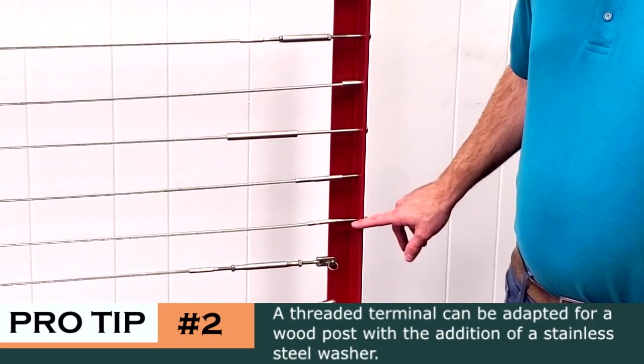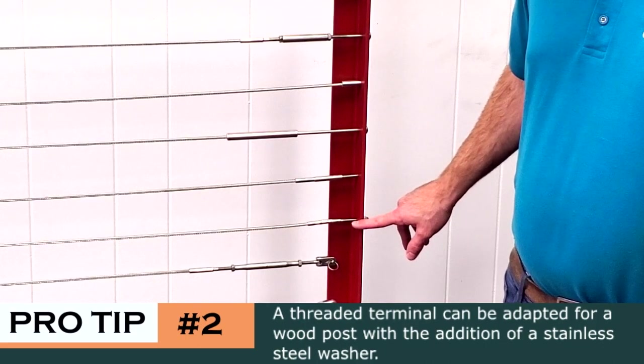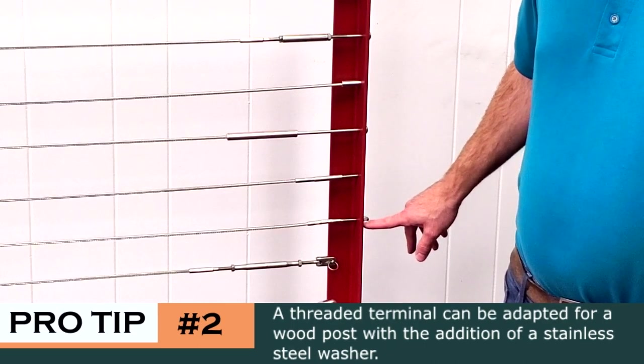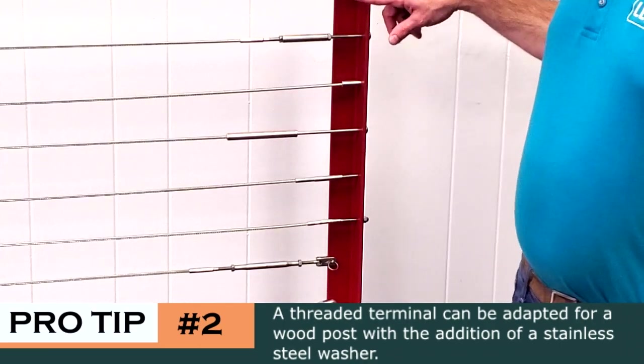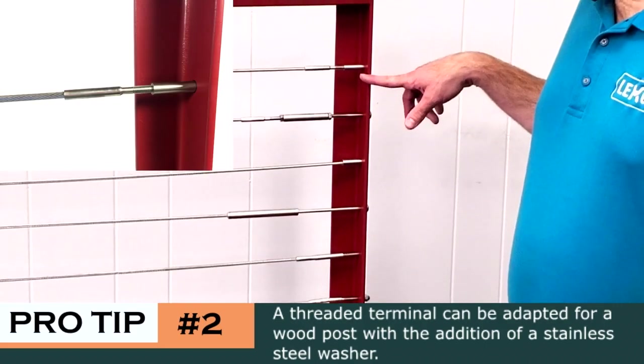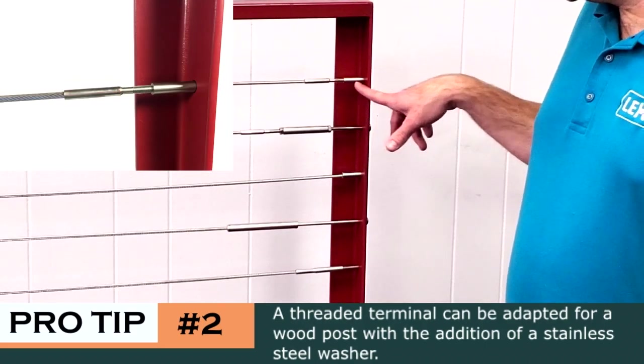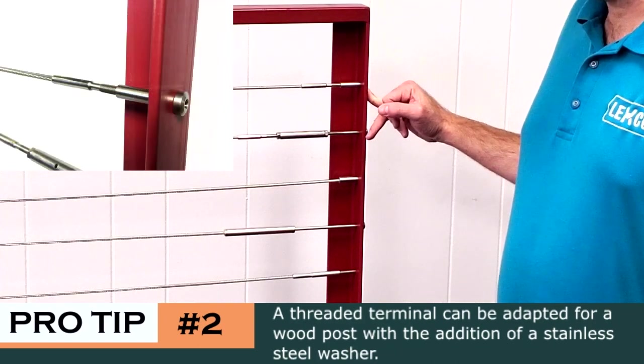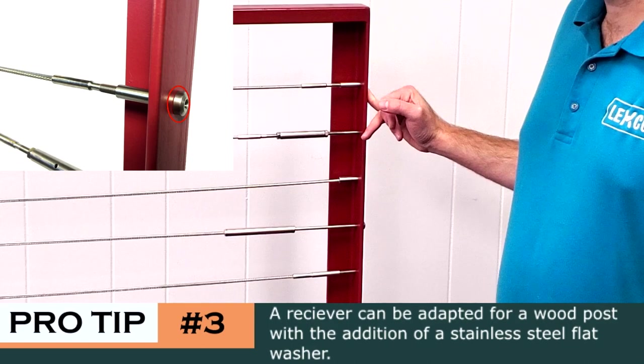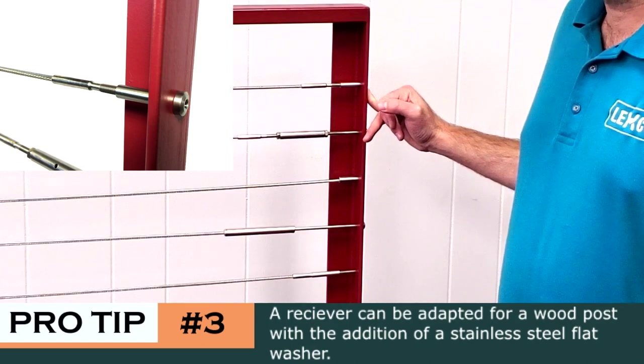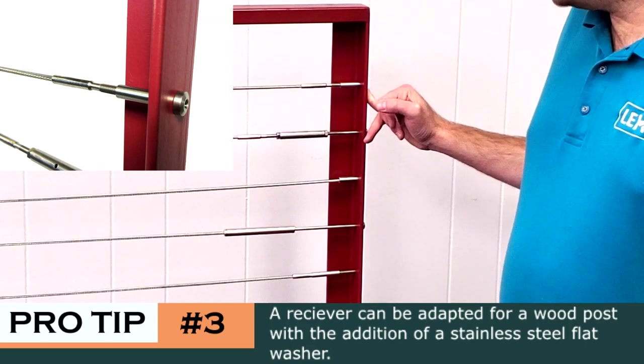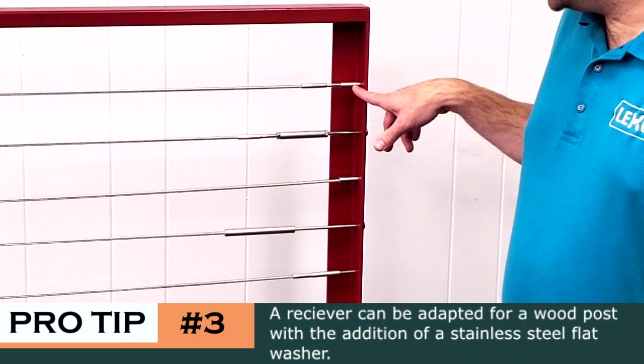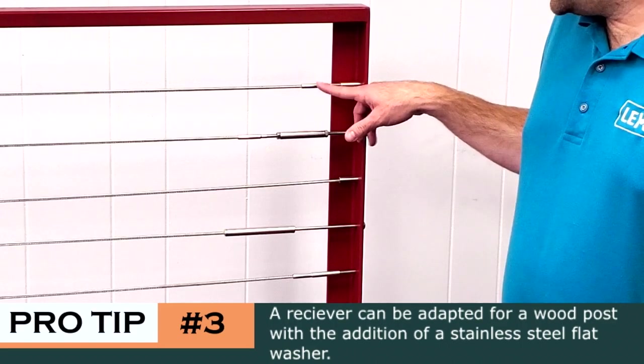So the next version, which I would say like a second generation of a threaded terminal for the end termination is instead of using a jam and acorn, it uses a receiver. Here's an example of that at the top. You can see you've got your threaded terminal and it's not going into a nut, it's going into a receiver. So the receiver is tapped, it's got internal threads and the receiver head has an Allen head slot so that you can use an Allen wrench and turn your receiver and that takes up your turnbuckle. So if you don't want an acorn nut, this is more elegant.